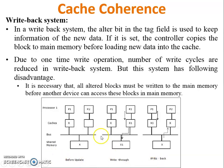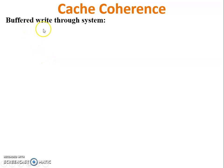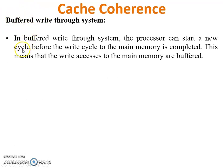The third strategy is the buffered write-through system. As the name suggests, before writing to cache or main memory, modifications are stored in a buffer area first. In this system, the processor can start a new cycle before the write cycle to main memory is completed. Write accesses to main memory are buffered, meaning any modification given by the CPU is stored in the buffer and then applied to main memory.